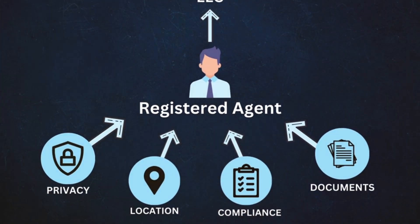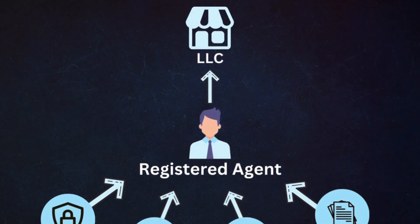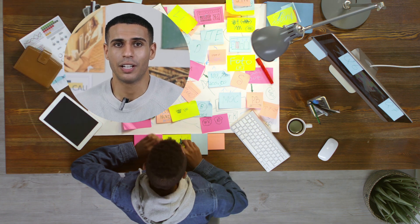A registered agent is a person or entity that you need to appoint to handle necessary government, tax, and legal correspondence on behalf of your LLC. You can become your own LLC's registered agent, although this is not recommended because you need to handle complicated legal documents and requirements. You also need to be available Monday to Friday from 9am to 5pm, and your name and address become part of the public record.